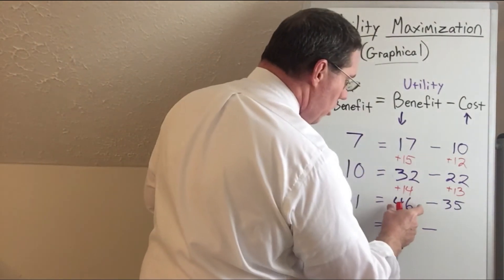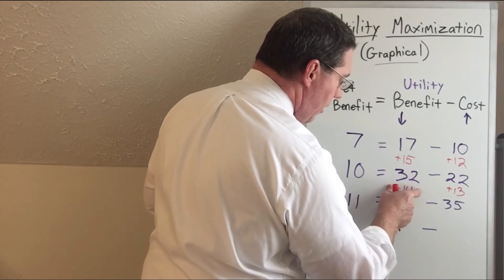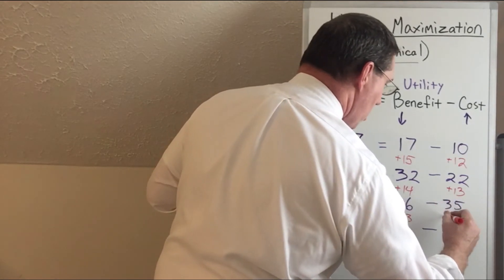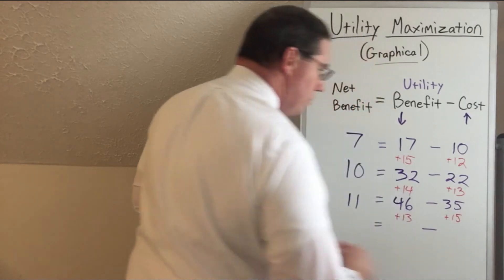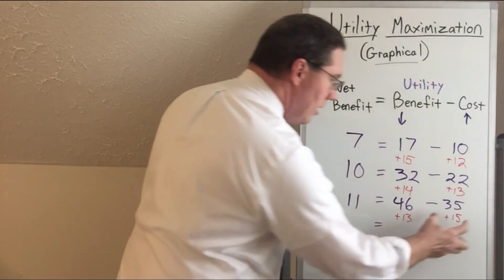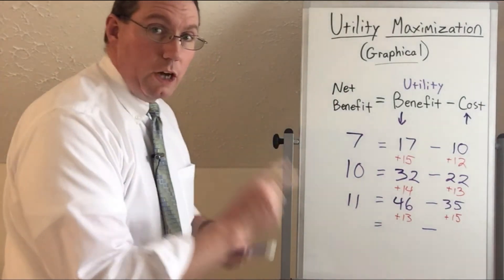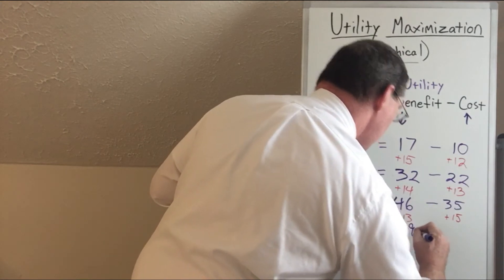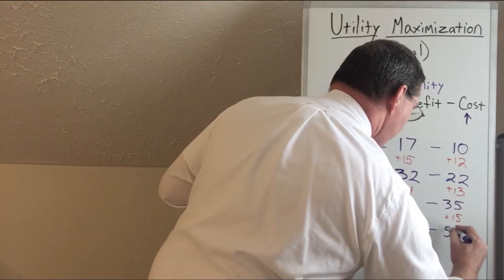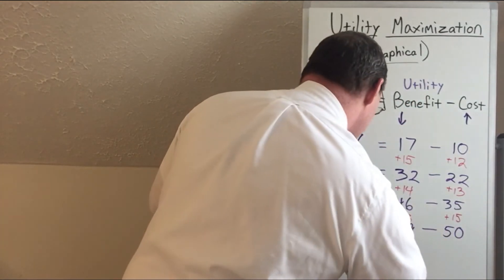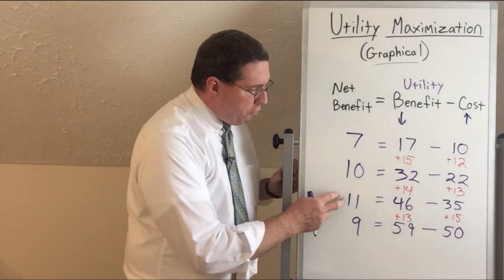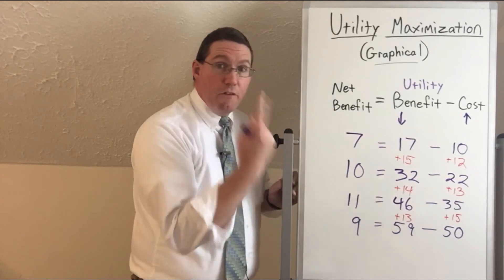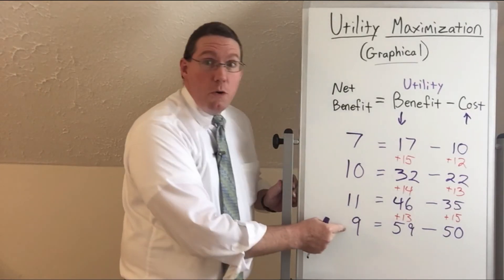But now we get to the place where if we want to consume one more, let's say that the added benefit of having one more of them, a fourth one, is now going to be 13, and the added cost of having one more is 15. So now note, here the added cost is higher than the added benefit. And watch what happens when that happens: 46 plus 13 is now 59, and 35 plus 15 is 50. And 59 minus 50 is now 9. Look what's happening. If we consume a fourth unit, we're actually going to get less utility, two less utility than if we consume three of them. Why would we do that? We wouldn't.